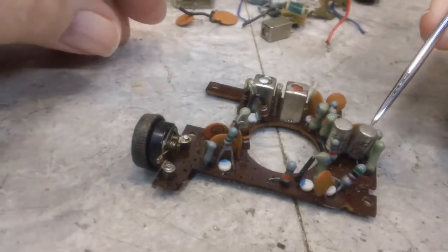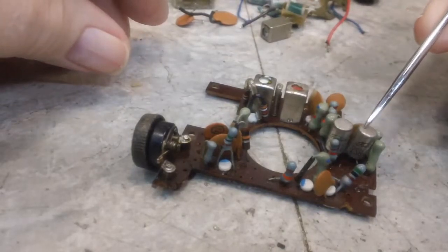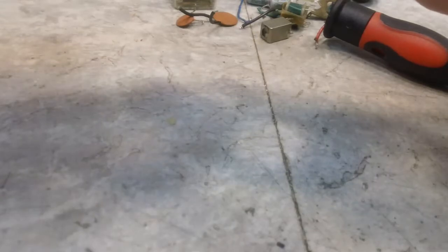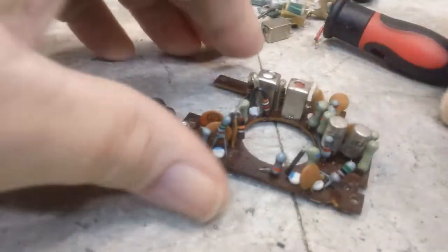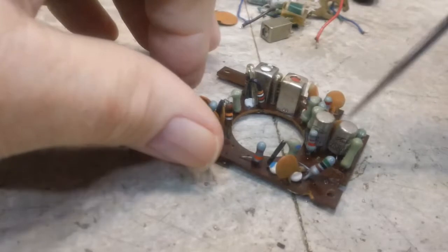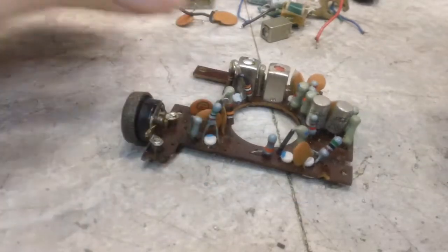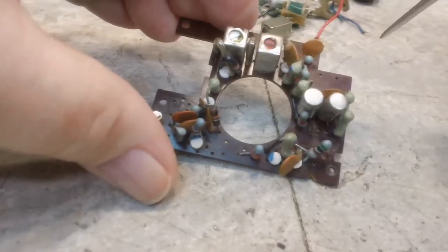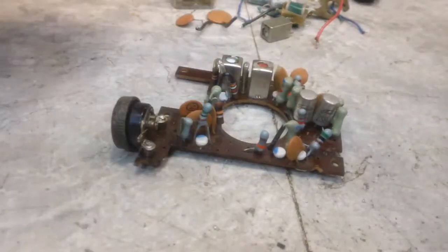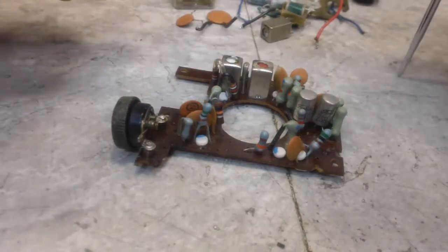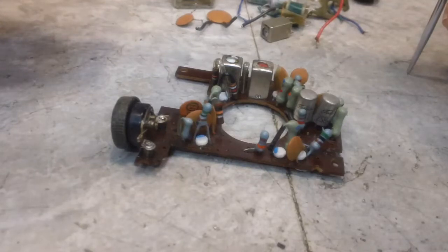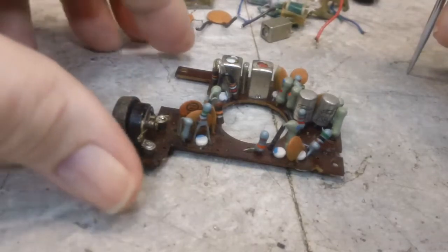Now clearly these two here are transistors. They are marked 2S B something. I did not even look at them close. Anyway they are transistors. I'm pretty sure these are the output transistors because the output transformer was right here. So I'm pretty sure those are the outputs.